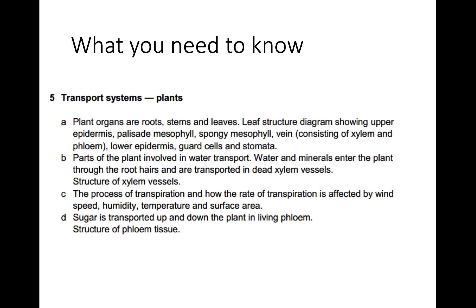That is transport systems in plants. Make sure you know the leaf diagram - upper epidermis, lower epidermis, spongy mesophyll, palisade, and cuticle. Know the differences between xylem and phloem. Know the transpiration process: water moves into the root, up through the xylem and out through the stomata. Know examples of what can increase and decrease the rate of transpiration. Thanks so much for listening - transport systems in animals is coming up next.